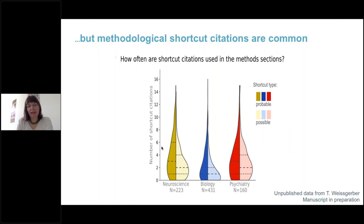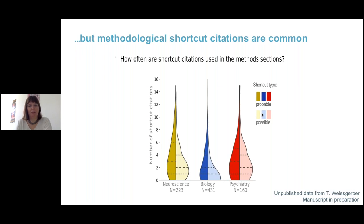We tracked the number of shortcut citations per paper, divided into probable and possible. A probable shortcut citation means the sentence where the citation occurred was the only sentence about that method, whereas a possible shortcut citation means there were additional following sentences providing some extra information. Most papers have at least one shortcut citation, and often papers have many. So an important part of the method section is actually captured not in the publication itself, but in shortcut citations to other papers.